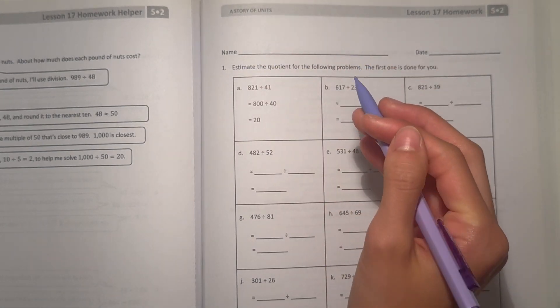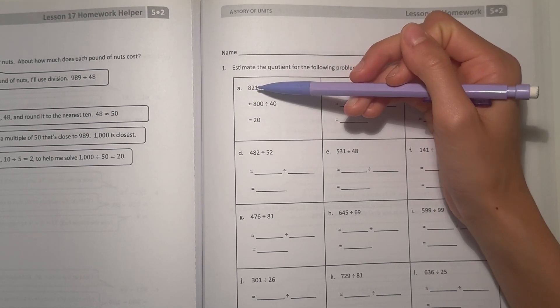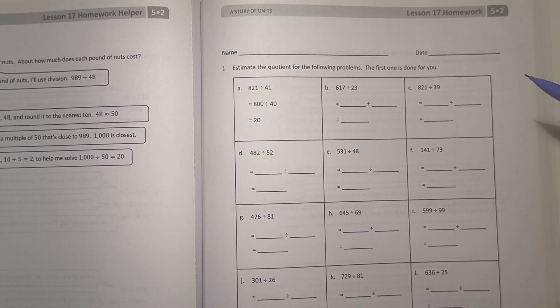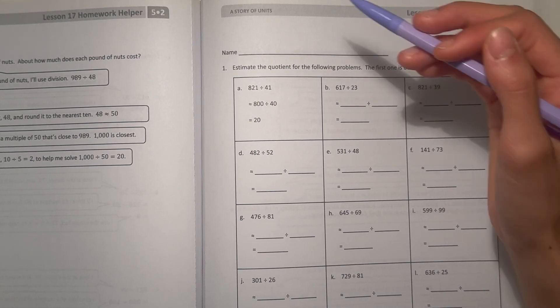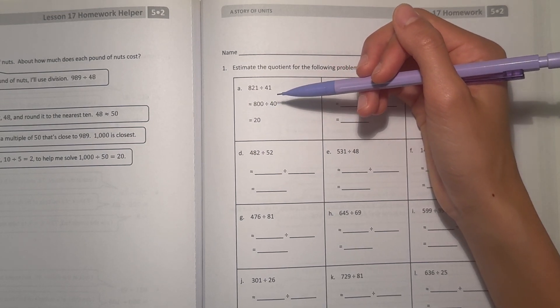Number one, estimate the quotient for the following problems. The first one is done for you. All right, so A, we have 821 divided by 41. So I first round the divisor and dividend to 800 divided by 40, and that gave them 20.